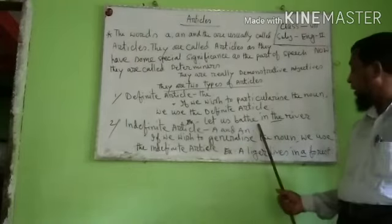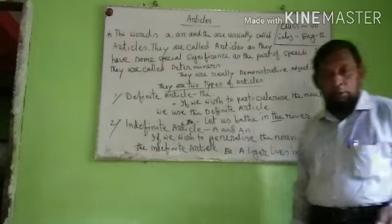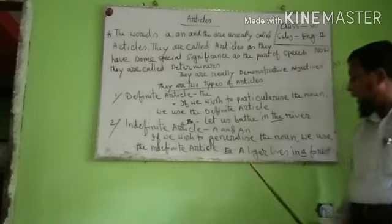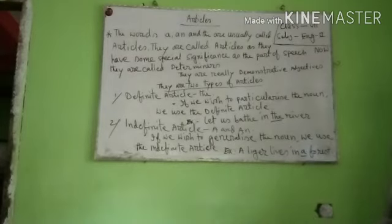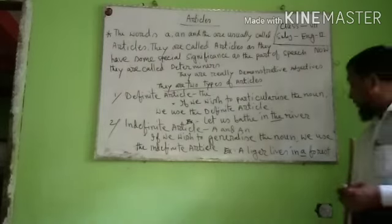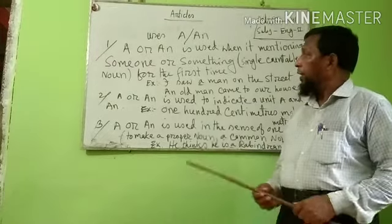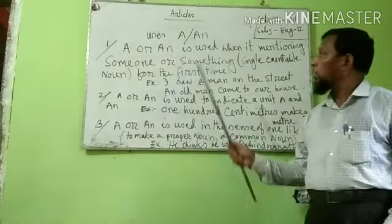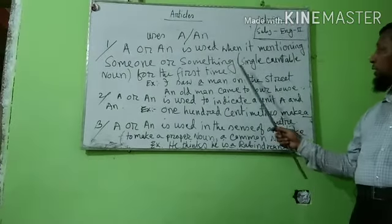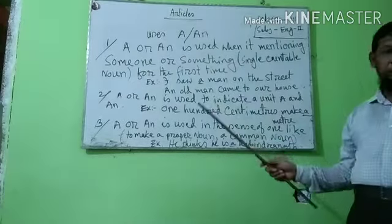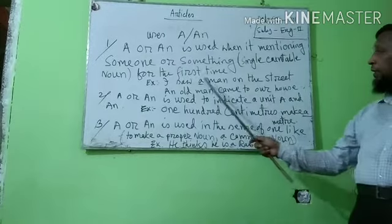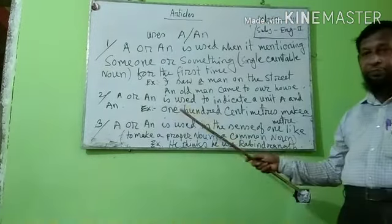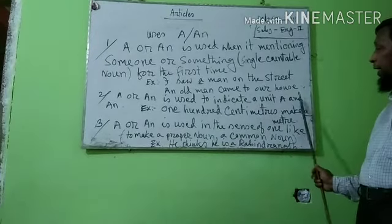Example: Let us bathe in the river. The indefinite article A or AN. Number one: A or AN is used when mentioning someone or something as a single countable noun for the first time. Example: I saw a man on this street.